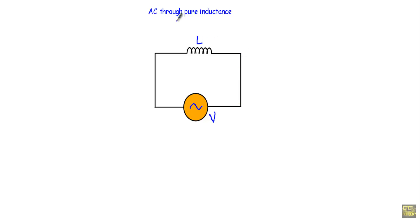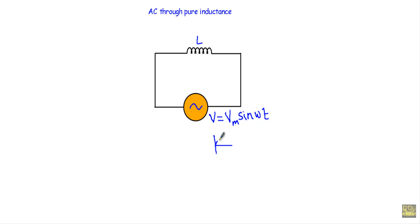In this video I will show you a circuit in which we will have a pure inductor. Pure inductor means the internal resistance of this inductor will be equal to zero — that means the resistance between the turns of this inductor will be equal to zero. Let's say the inductance of this inductor is L. I am supplying this inductor with an alternating voltage V, where V equals Vm sine omega t. Since we are applying an alternating voltage, it will have a waveform of a pure sine wave shape.